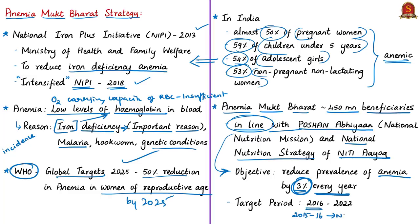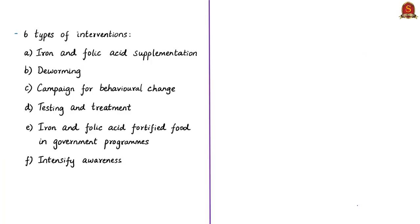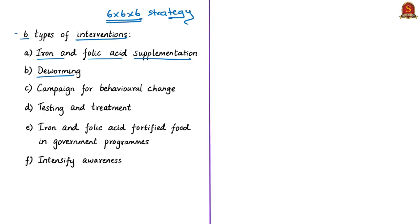Anemia Mukt Bharat is called the 6×6×6 strategy because it targets 6 beneficiary groups through 6 interventions by 6 institutional mechanisms to achieve the anemia reduction target by 2022 — the 75th year of Indian independence. The six interventions include: prophylactic iron and folic acid supplementation; de-worming using albendazole tablet; intensified behavior change communication campaign focusing on child feeding practices and iron-rich food intake.